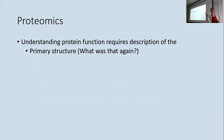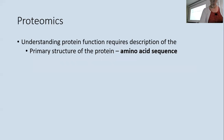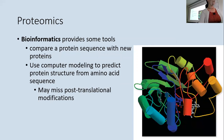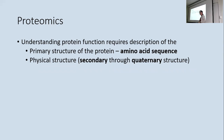Understanding protein function requires knowing about protein structure. Primary structure is the order of amino acids in the protein — amino acids are the monomers of a protein polymer. Then the actual physical folding and shape is the secondary through quaternary structure of that protein. We'll start Friday at bioinformatics — that's a good spot to break off. We'll finish up chapter 18 on Friday, have a little time to review for Monday. Test on Monday, review on Wednesday. We're on the downhill.